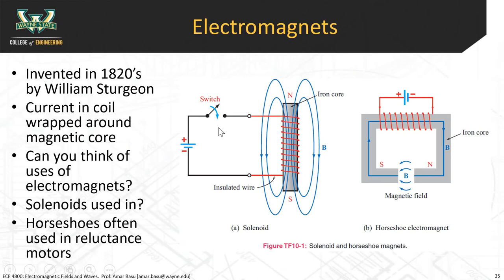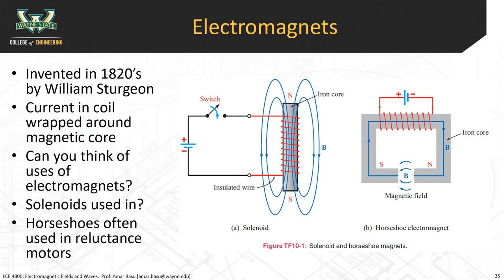Let's start with electromagnets. Electromagnets are an application of the magnetostatics concepts we've been talking about. They were invented in the 1820s by William Sturgeon and have a wide range of applications. A basic electromagnet is where you have a coil of wire wrapped around a magnetic core — typically iron or some other material with high magnetic permeability — and you run a current through it. Can you all think of some uses of electromagnets other than the reluctance motors mentioned here?